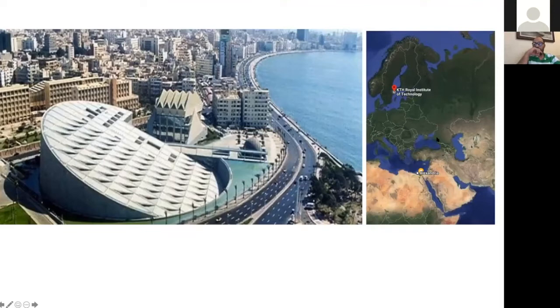So first of all, I come from the city of Alexandria. The city of Alexandria is in the northern coast, or the southern coast of the Mediterranean. It is the place of the well-known Alexandria Library, which is around 2,000 years old. Unfortunately, it has been burned.